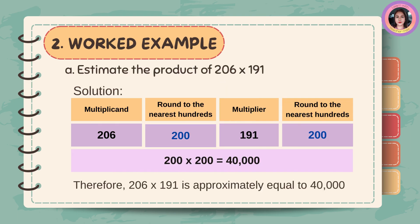Estimate the product of 206 times 191. The multiplicand is 206; rounded to the nearest hundreds is 200. The multiplier is 191; rounded to the nearest hundreds is 200. 200 times 200 is equal to 40,000. Therefore, 206 times 191 is approximately equal to 40,000.